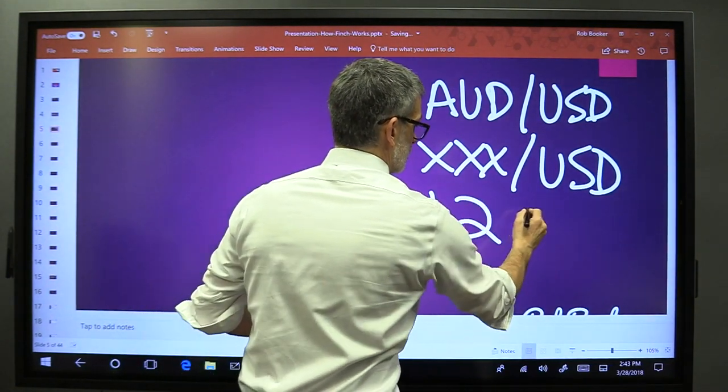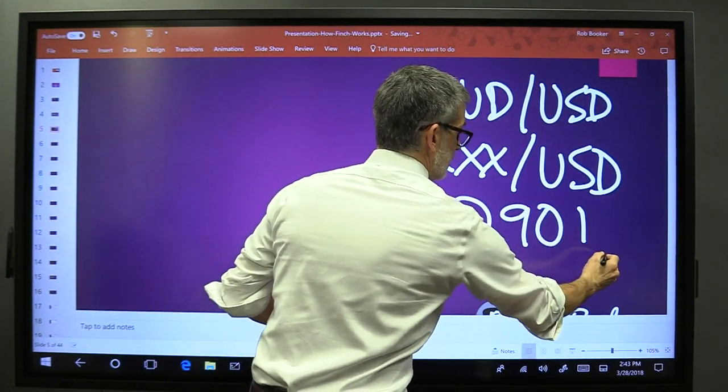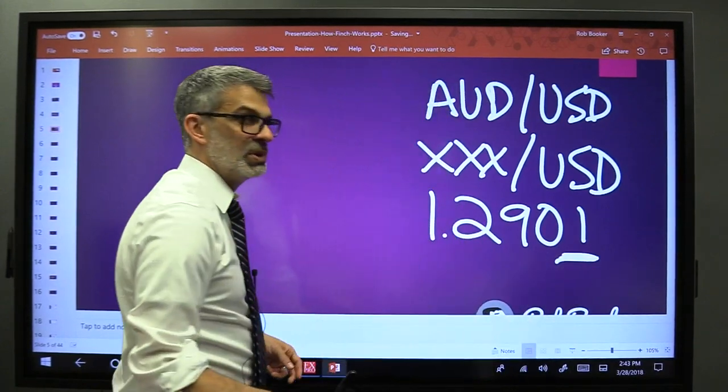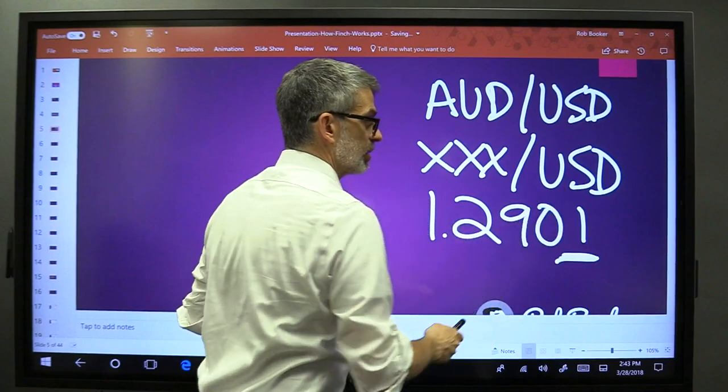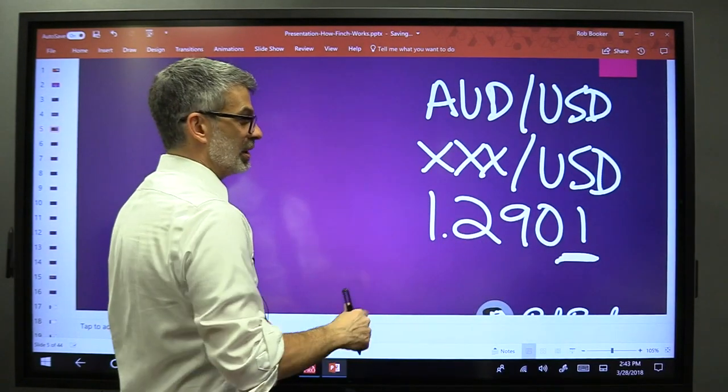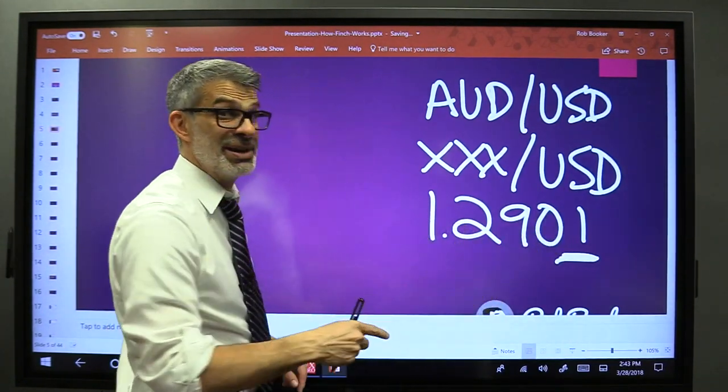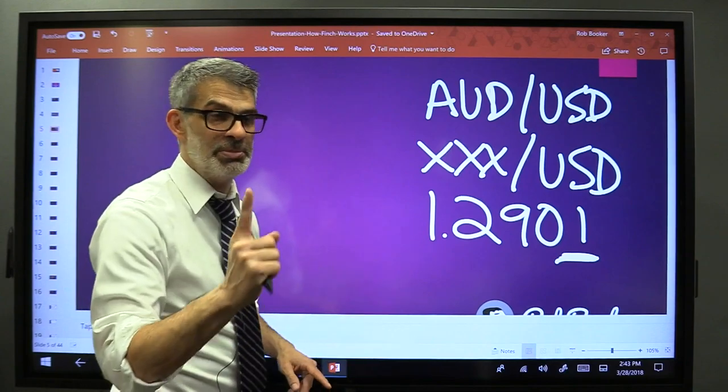the fourth number is the pip. That's a pip, so if it moves from 2,901 to 2,902, that's one pip up. From 2,901 to 2,900 even, that's one pip down.